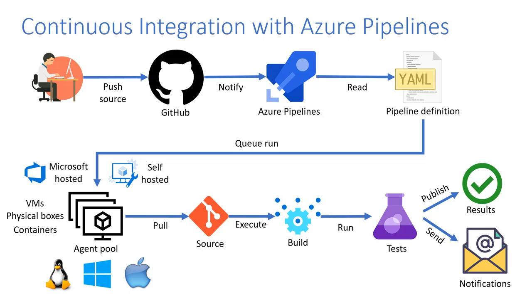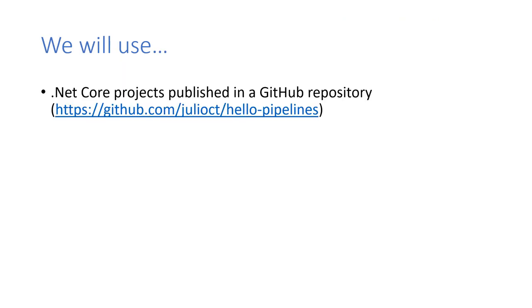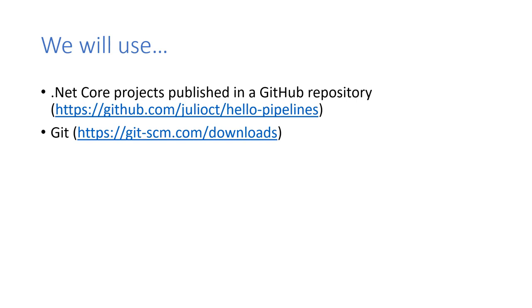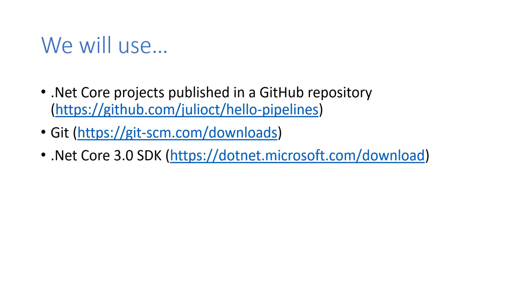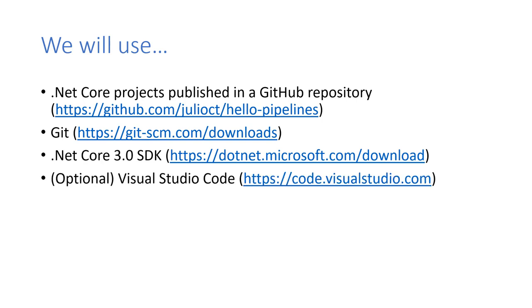There's also a deployment side — continuous deployment — which we will not cover in this video. For this tutorial, we'll be using a couple of .NET Core projects already published in a GitHub repository, Git to manage changes, the .NET Core 3.0 SDK to build and test code locally, and Visual Studio Code as our code editor, though you could use any editor that works best for you.